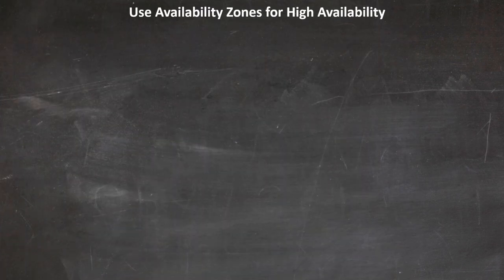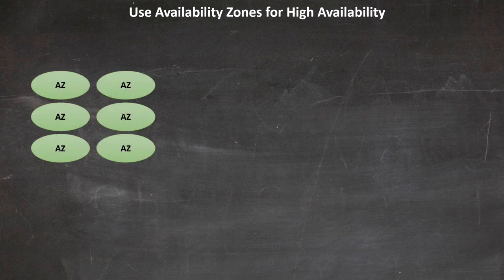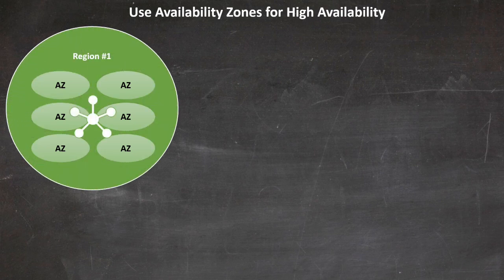Now let's explore how to implement resiliency across different environments. First, let's consider utilizing availability zones for high availability. An AZ is one or more discrete data centers with redundant power, networking, and connectivity in a specific geographical region. Each AZ is isolated but connected to other AZs within the same region via low-latency links. AZs are designed to be independent, so failures in one AZ don't affect others. By distributing your services across multiple AZs, you create a robust system that can withstand localized failures, maintaining operational continuity.